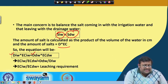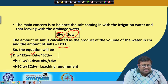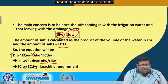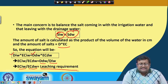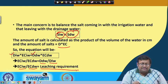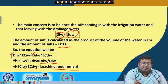From this equation we can see EC_iw / EC_dw equals D_dw / D_iw. This ratio EC_iw / EC_dw is basically termed as leaching requirement. This is the formula of leaching requirement.